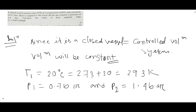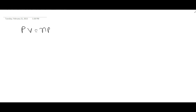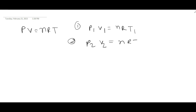Cv is given as 0.657 kJ/kg·K. From the ideal gas equation pV = nRT, for process 1: p1V = nRT1, and for process 2: p2V = nRT2.